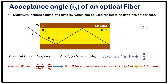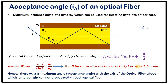From Snell's law, sin(i) / sin(theta) = n1 / n0, where n0 is the refractive index of the outside medium and n1 is the refractive index of the core. From this relation, theta will increase with the increase in i, and thus phi will decrease. Therefore, there must be a maximum angle with the axis of the optical fiber above which light entered cannot propagate through the optical fiber. This is the importance of the acceptance angle.